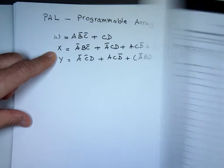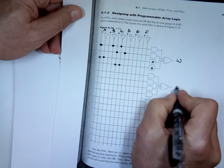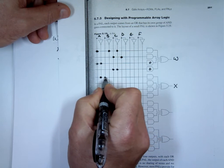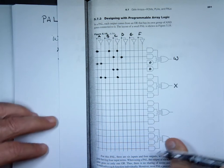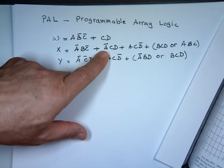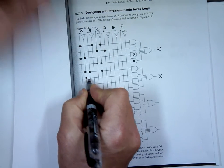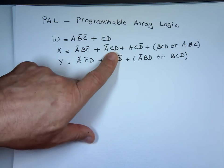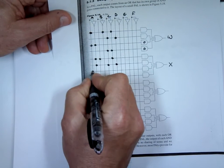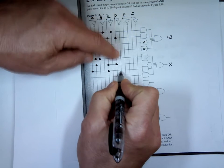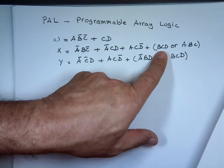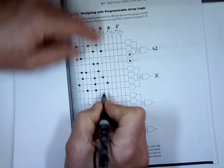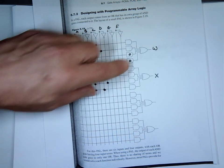Now let's get to X. X has four AND gates, so I'm in good shape — there are four of them available. The first one: A-bar, B, and C-bar. The second: A-bar, C, and D. The third gate: A, C, and D-bar. The fourth gate is B, C, D — I'll go with that. Notice that's my four AND gates all together, and that's my X.